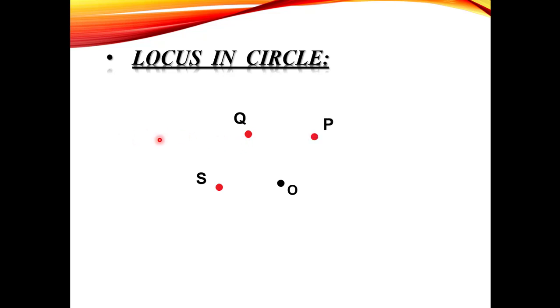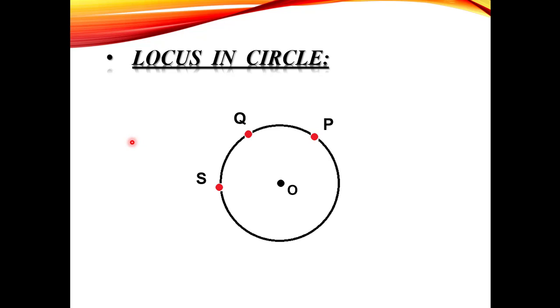Finally, मैंने एक तीसरा Point लिया है P, और यह भी O से 5 cm के फासले पर है। तो यह तीनों Points एक Fixed Point O से Equal Distance पर हैं। अगर मैं इन सारे Points को जोड़ूं, मिलाऊं, तो इससे मुझे एक Circle form होती नज़र आएगी।